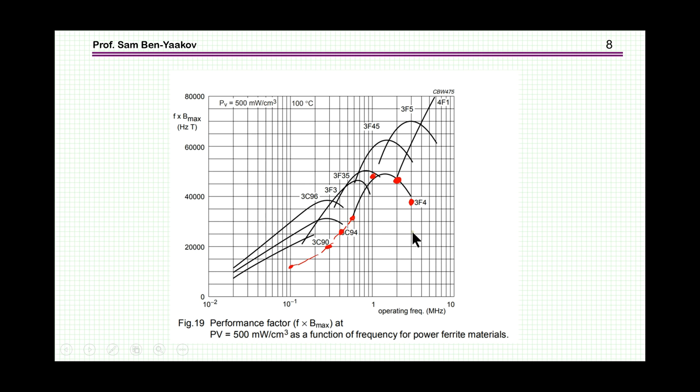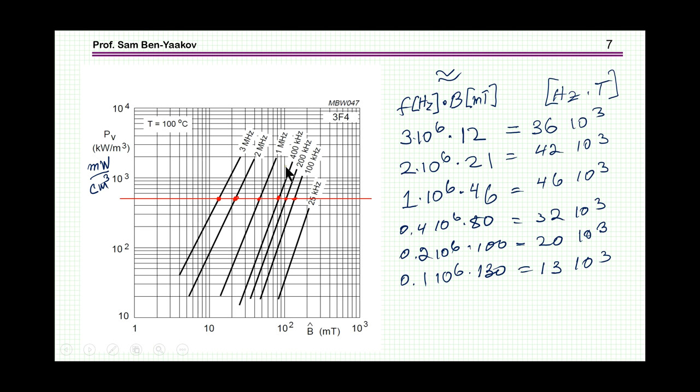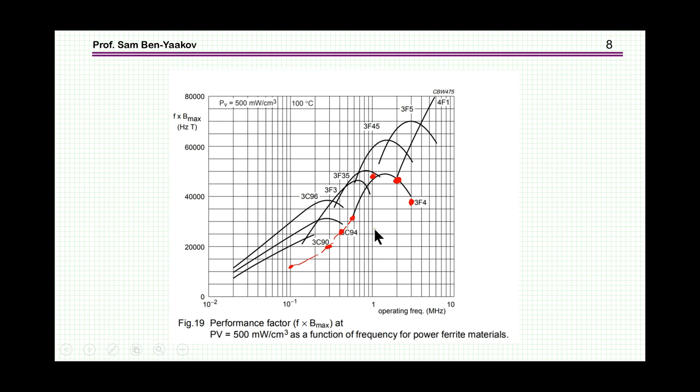What we are actually seeing here is that at this frequency, which is about 1.5 megahertz, about here, you'll get the highest product of frequency times B hat. So this would be the optimum place to use this particular core. Now this is not the best of the core. You see that for any given frequency there are some better materials. So this is a very good way of selecting the material for an application and for a given power level to choose the lowest core volume or size.